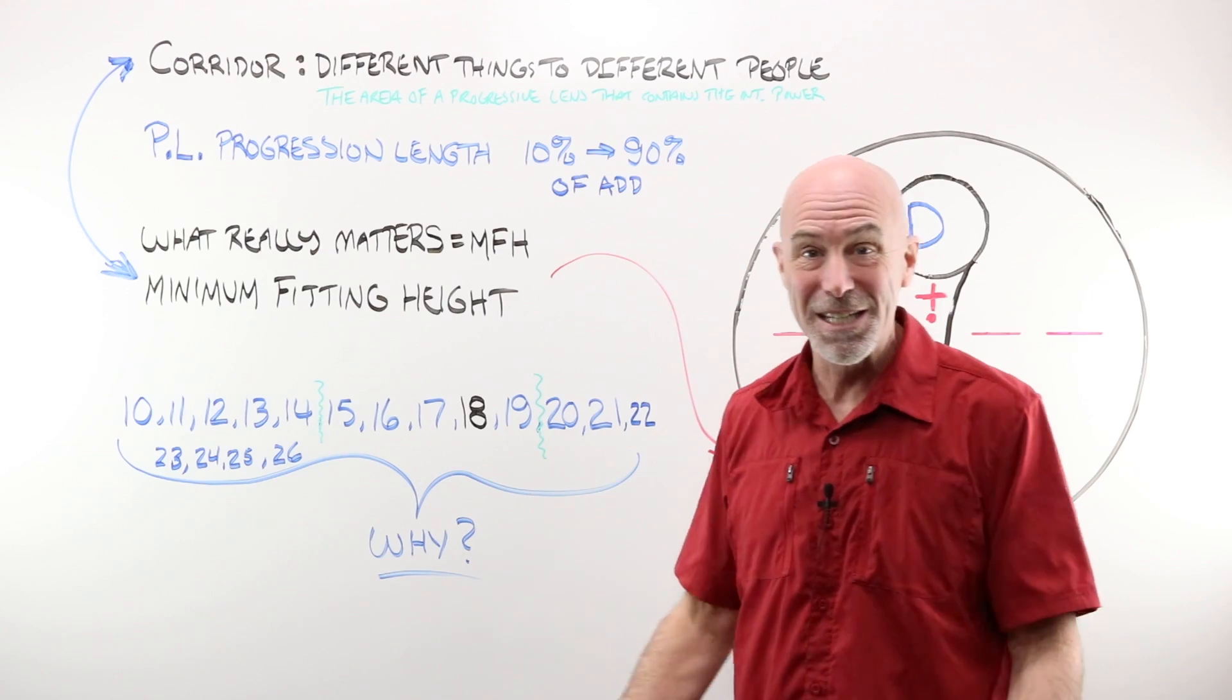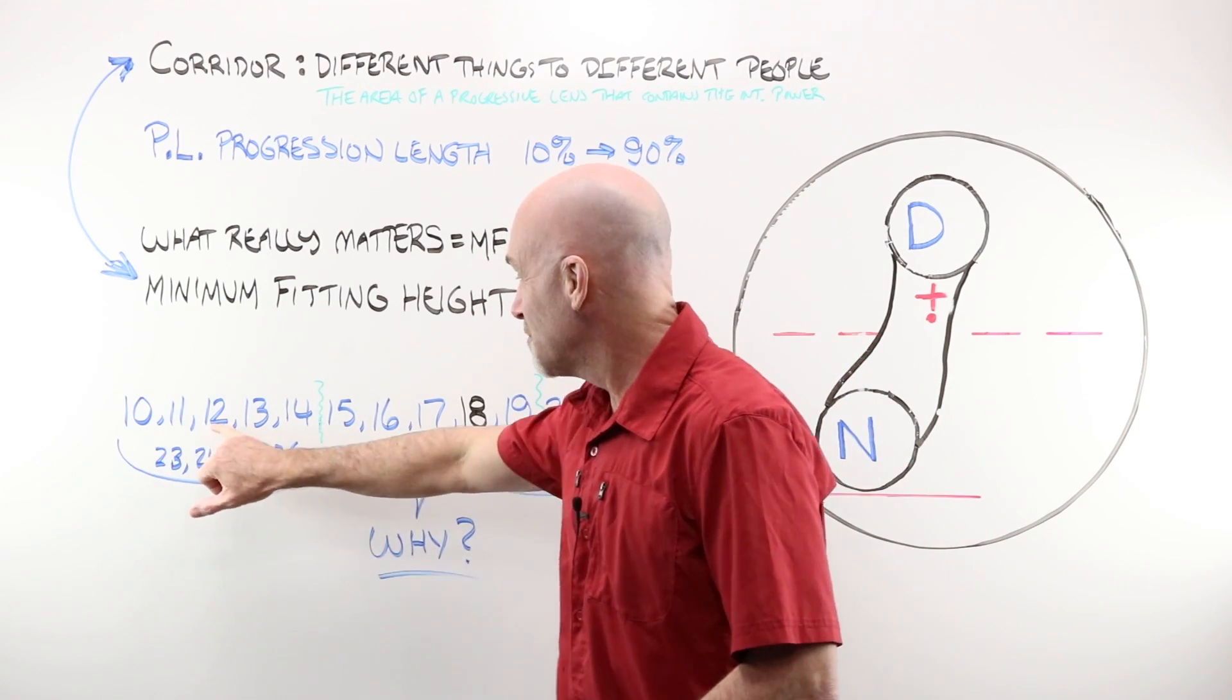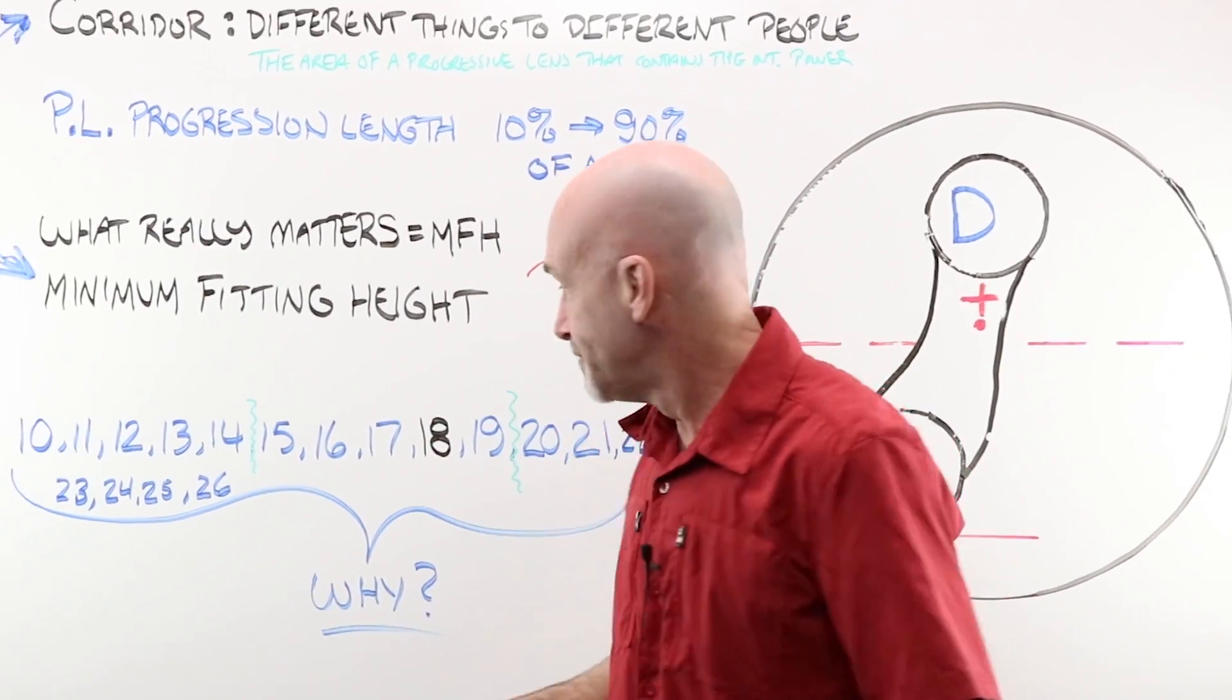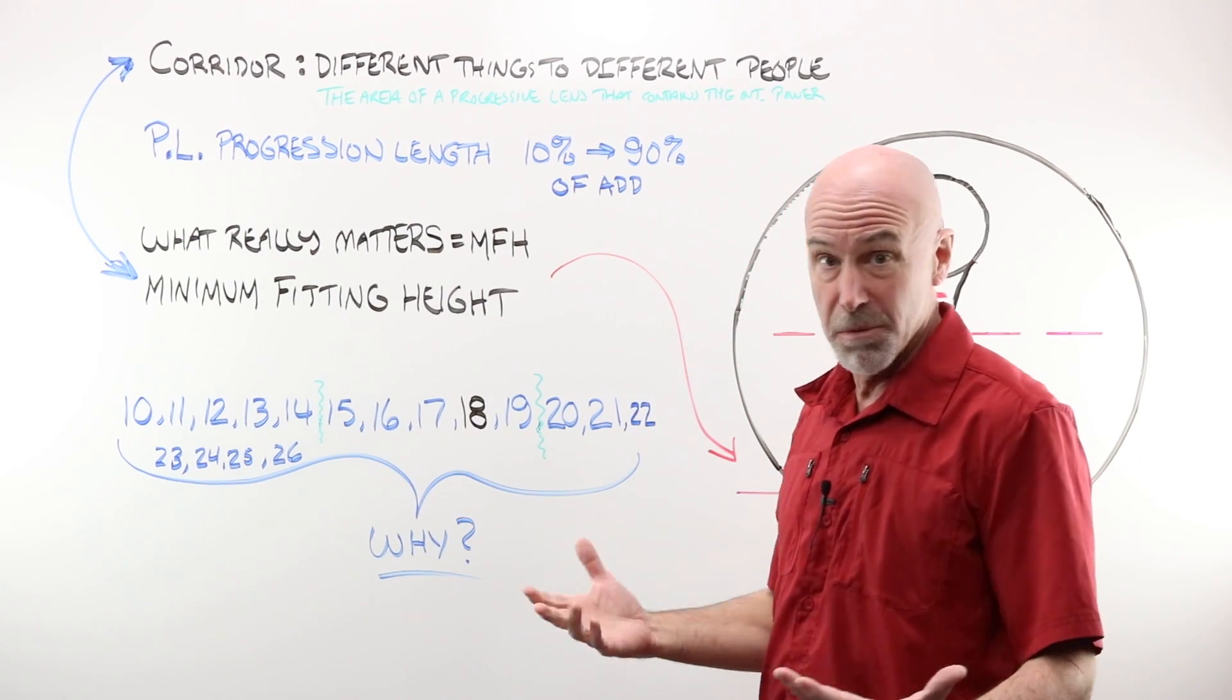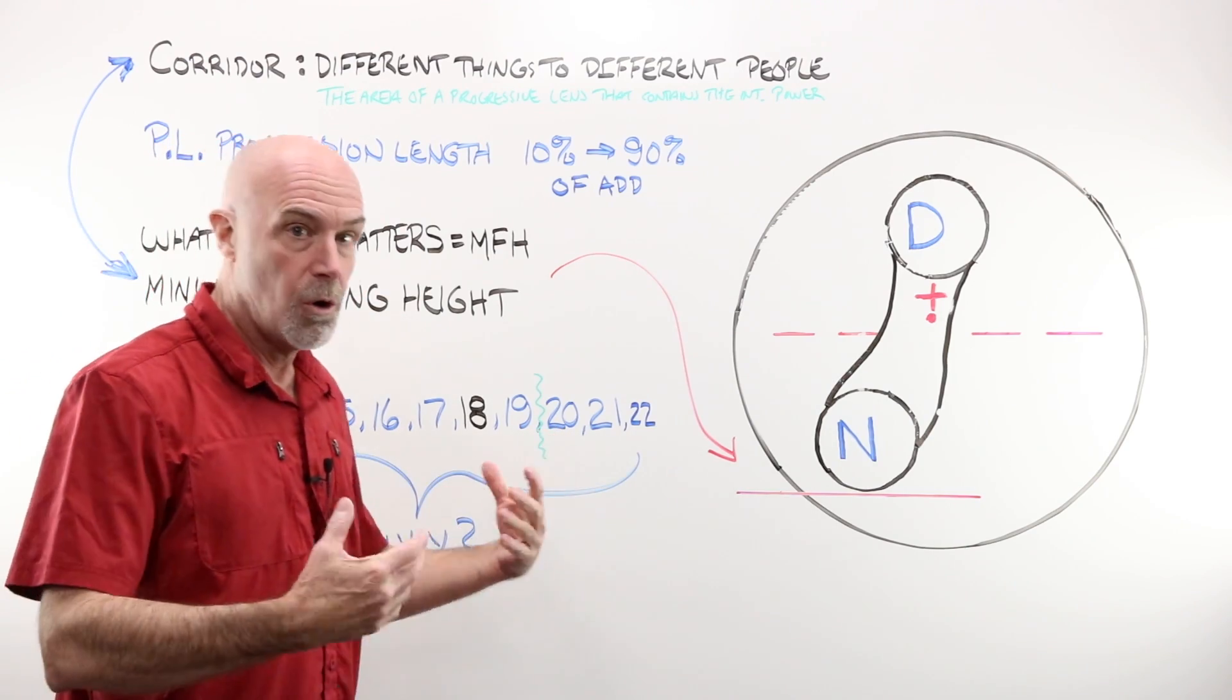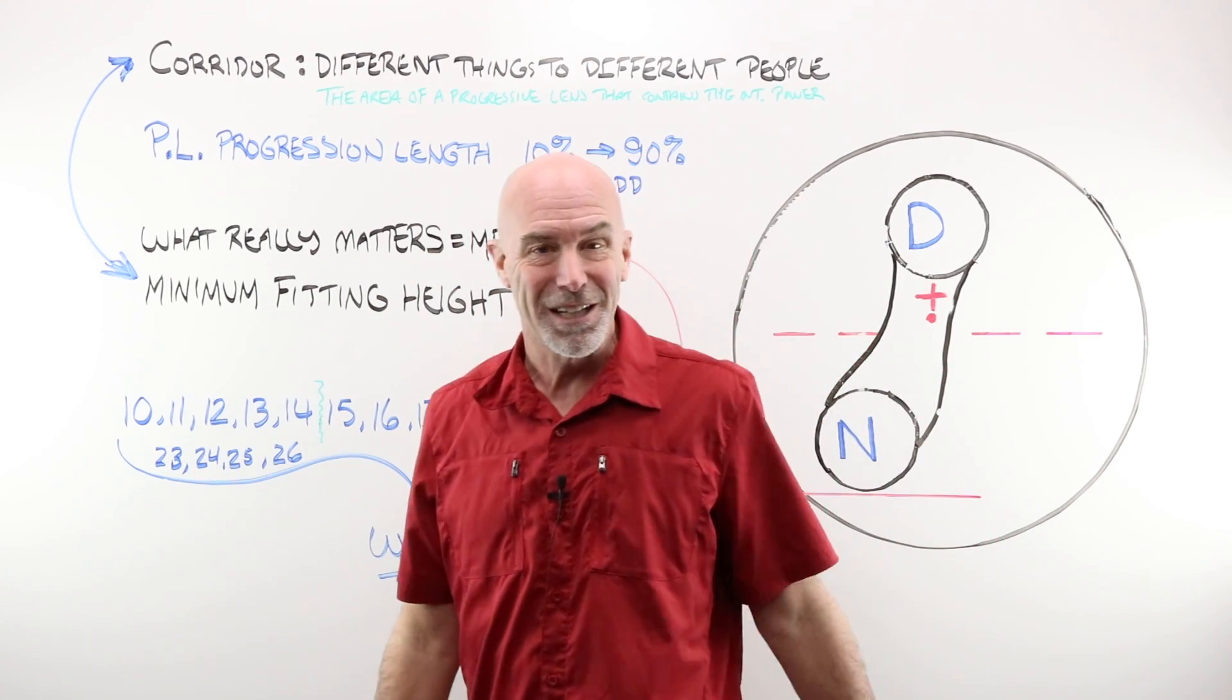Now, if progression length or corridor, if you will, isn't something that we control, what do we control? What matters to us as opticians? Well, what really matters is the minimum fitting height. That's kind of everything, and we're going to talk about that a whole lot. If you open up one of those PAL-ID catalogs and you leaf through, and I'm going to read this, you have lenses with a minimum fitting height of 10, 11, 12, 13, and 14. We're going to call those short corridor lenses, and we'll learn when you use those. We have lenses with 15, 16, 17, 18, and 19 minimum fitting heights. Great lens, 18 being the magic number, and we're going to get into that a whole lot. And then we'll talk about the only times that you use long corridors of 20, 21, 22, 23, 24, 25, and believe it or not, there was one out there with a 26.